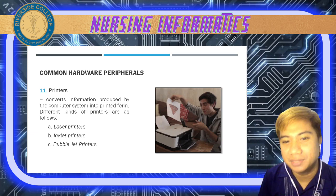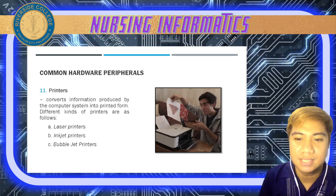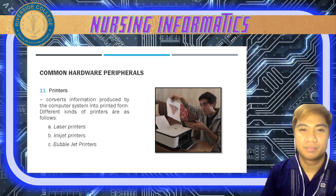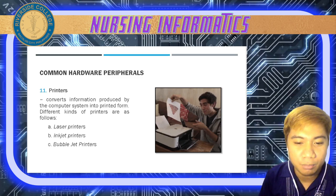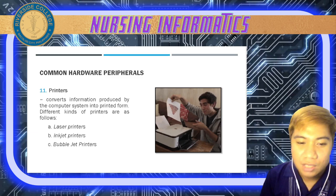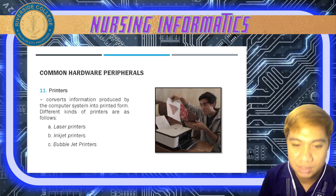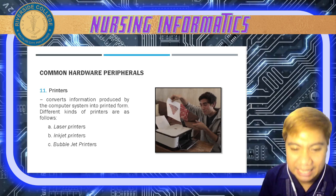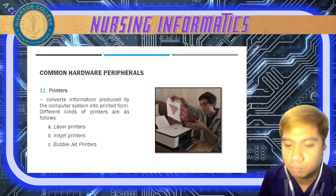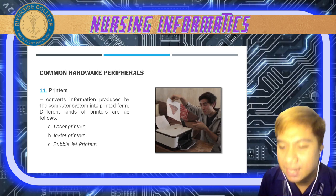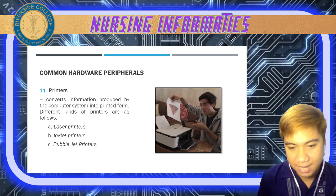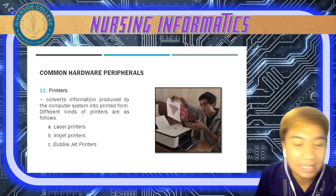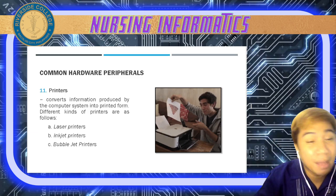We also have printers — they convert information produced by the computer system into printed form. We have laser printers, which offer a substantial increase in output quality and speed over inkjet printers and are used for printing graphics and illustrations. We also have inkjet and bubble jet printers: bubble jet printers use heating elements to prepare the ink, whereas inkjet printers use piezoelectric crystals to ionize the ink.